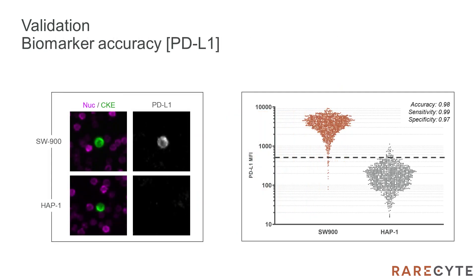Here we show measurement of biomarker accuracy for our PD-L1 assay. The plot at right shows PD-L1 MFI values obtained with the assay for SW900 and AP-1 cells and a dotted line to indicate the threshold used to determine positive versus negative PD-L1 status. Using this threshold, the assay achieves PD-L1 sensitivity of 0.99, a specificity of 0.97 for an overall accuracy of 98%, indicating a highly reliable assay for PD-L1 detection.